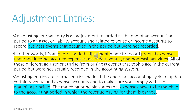Next are adjustment entries. What are adjustment entries? Basically these are events or transactions which have occurred in the accounting period but were not recorded. Or you can say it is an end-of-period adjustment made to record prepaid expenses, unearned income, accrued expenses, accrued revenue, and non-cash activities. Adjustment entries focus on the matching principle, which states that expenses have to be matched to the accounting period in which the revenue paying for them is earned.